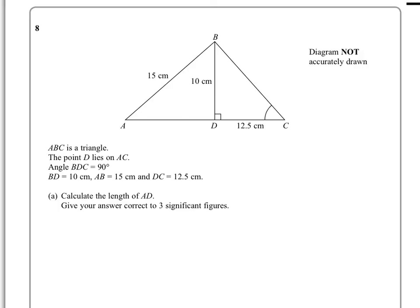In question 8, we're given a triangle ABC and there's a point D which lies on AC, which essentially cuts this triangle ABC into two individual triangles. And we're asked in part A to calculate this length here.